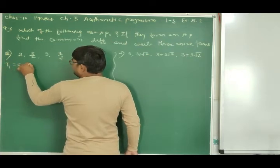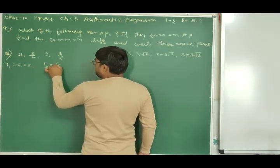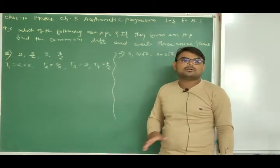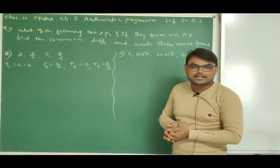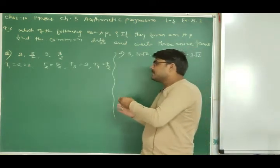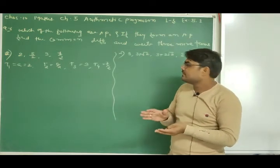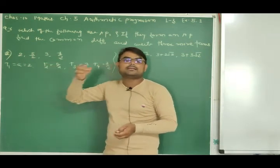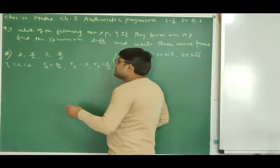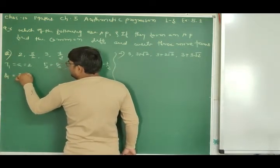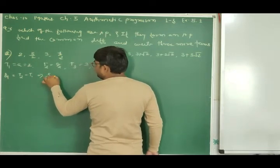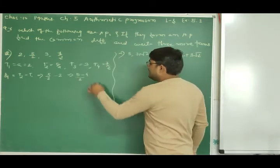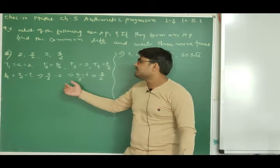The given terms are T1 = A = 2, T2 = 5/2, T3 = 3, T4 = 7/2. First we will check if it is an AP. We find D1 = T2 - T1 = 5/2 - 2. Taking LCM: (5 - 4)/2 = 1/2. This is the difference between the first two terms.